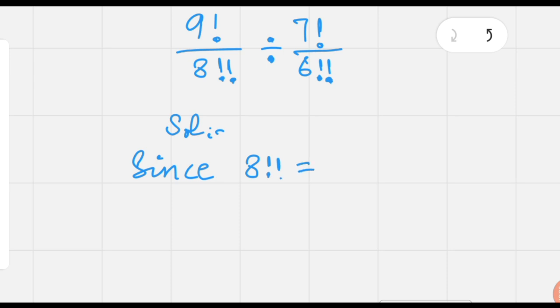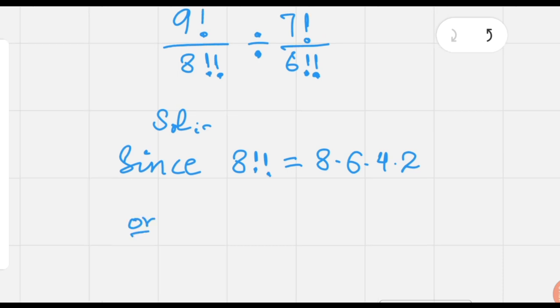Since we know by definition of double factorial, a double factorial can be written as 8 times 6 times 4 times 2. That is, a double factorial is basically the product of even numbers from 8 to the lowest even number, that is 2.